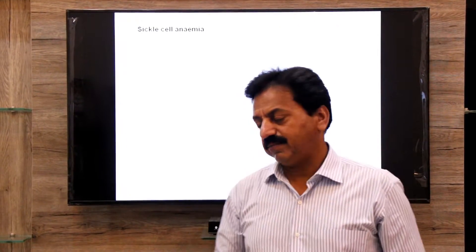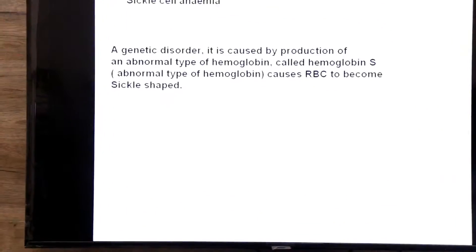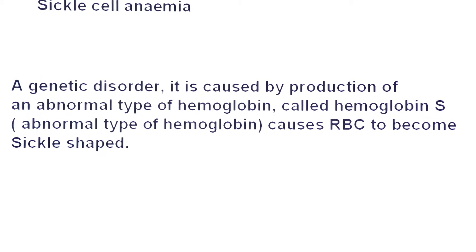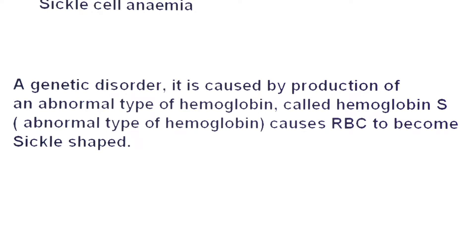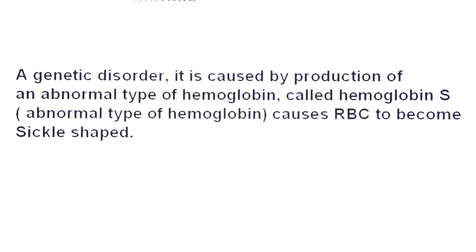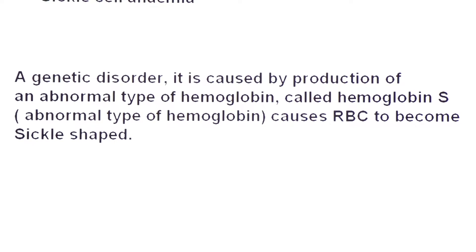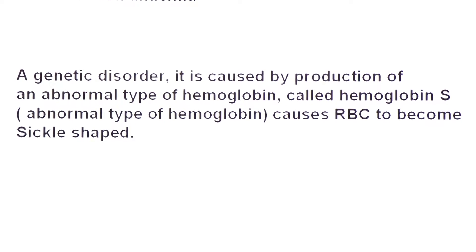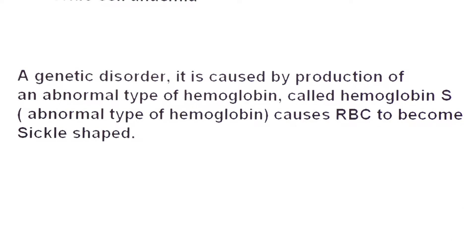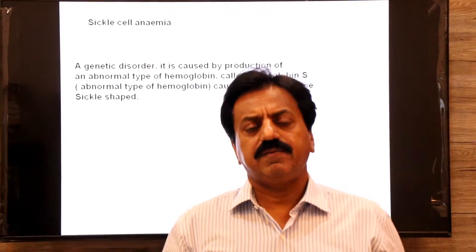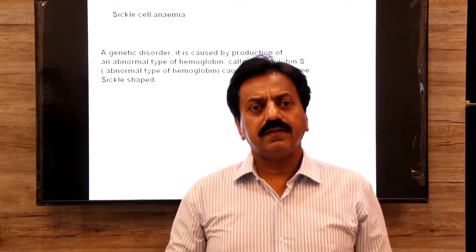First of all, the definition: what is sickle cell anemia? It is a genetic disorder caused by the production of an abnormal type of hemoglobin, called hemoglobin S. This abnormal type of hemoglobin causes RBCs to become sickle shaped. Sickle cell anemia is a hemoglobin disorder.